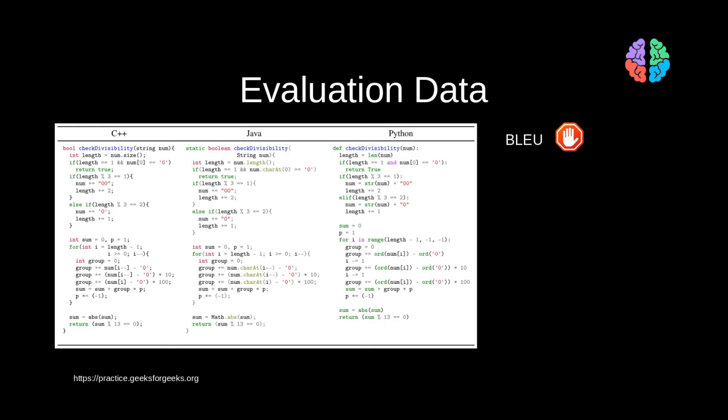Traditionally, BLEU is a score used to compare language translation systems. When it comes to programming languages, a small change in the program can have a significant impact on the output. For example, imagine minus being replaced by a plus in this code. The output of the program will be quite different.